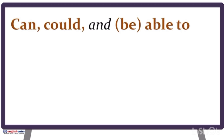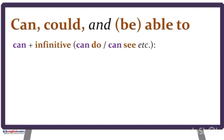Lesson 1: Can, Could, and Be Able To. Now we are going to learn about modal verbs. We are going to start with can, could, and be able to. We use can to say that something is possible or allowed, or that somebody has the ability to do something. We use can plus infinitive, such as 'can do', 'can see', and so on. Let's check some examples.